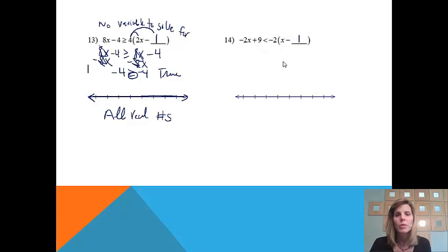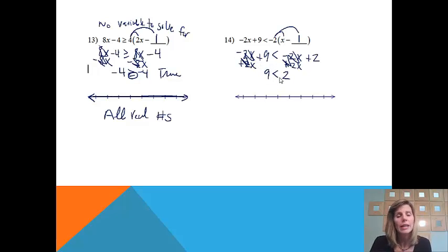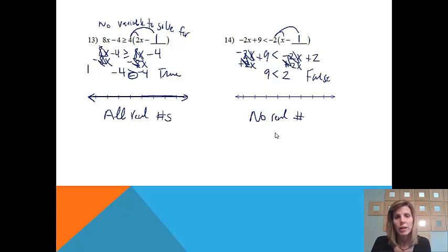One last one. We start solving normally, leaving the left side alone and distributing on the right: negative 2 times x is negative 2x, and negative 2 times negative 1 is positive 2. Add 2x to both sides — the x terms drop out on both sides — and we get 9 is less than 2. That is a false statement. Which means no matter what we plug in for x, this will never give a correct answer. We don't shade anything on the number line. The answer is no real number works — or we write a circle with a slash through it.